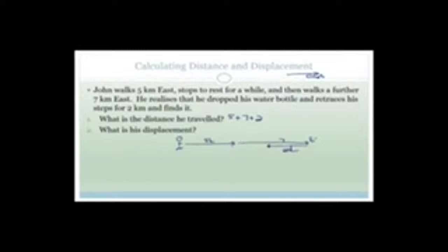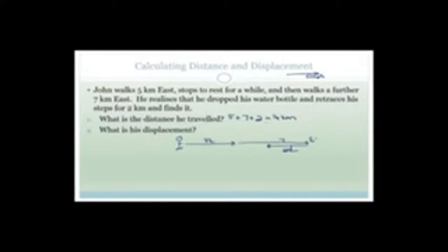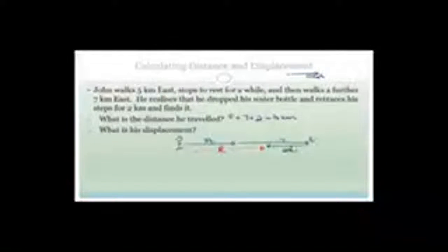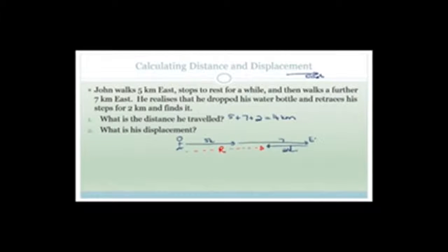He traveled 5 kilometers, had a little break, then traveled another 7 kilometers, realized he dropped his water bottle, and went back 2 kilometers. The actual distance traveled is 14 kilometers. Now, what is his displacement? Remember, displacement is how far away he is from where he started — this is his resultant or actual displacement.